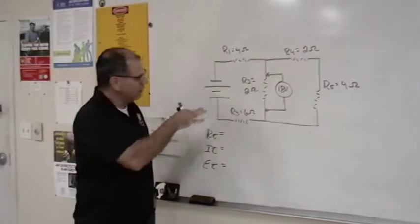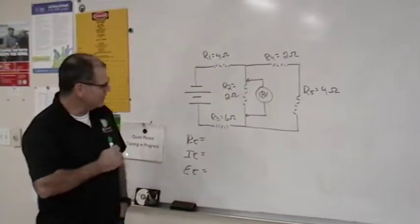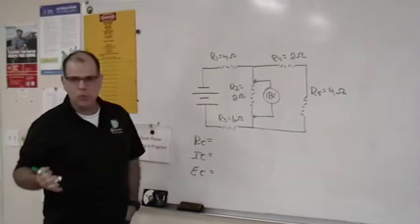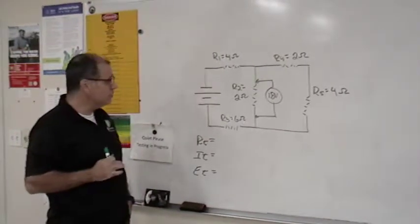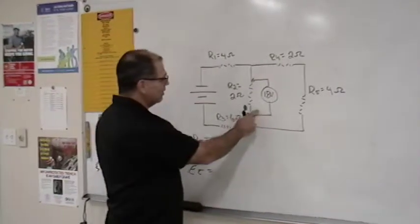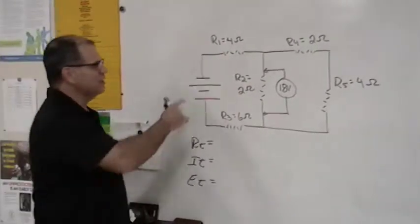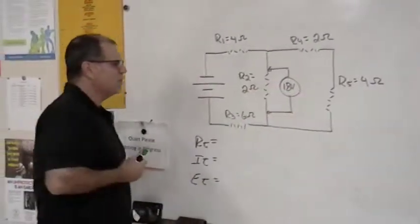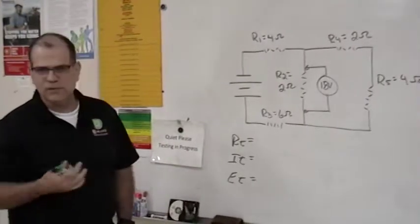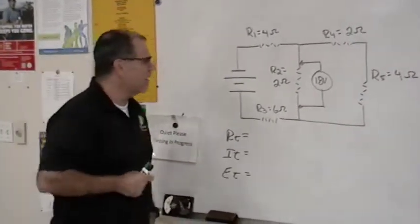What we have here is a combination type circuit, except they don't give us the total voltage to start off with. What they do give us, they give us the voltage drop at resistor number 2. And obviously they give us all of the values of the resistors, all of the ohmic values.